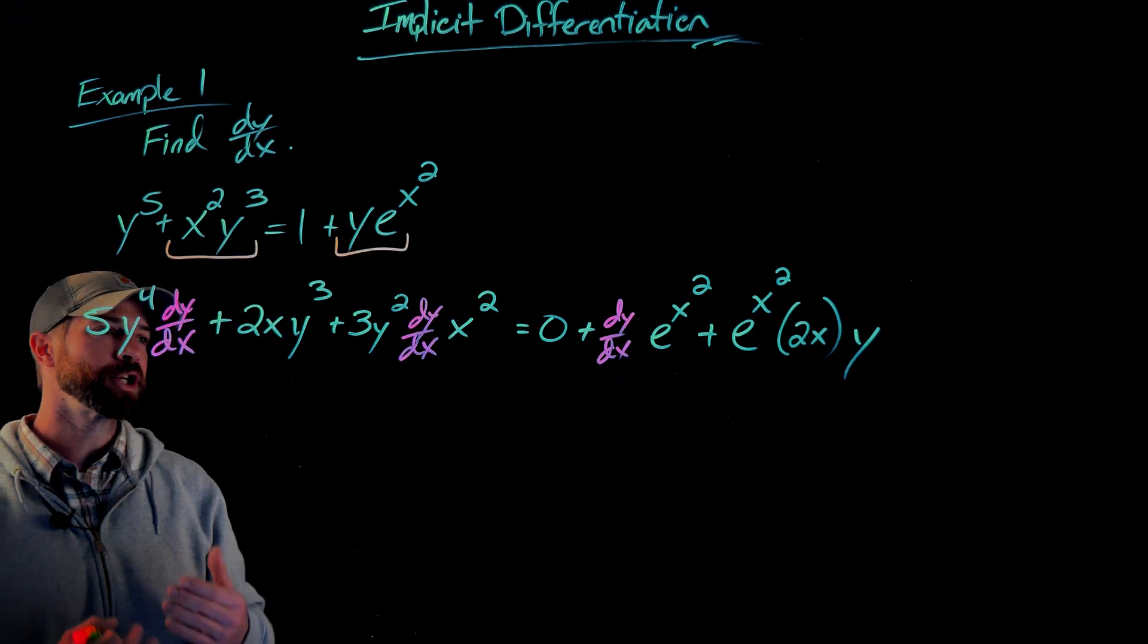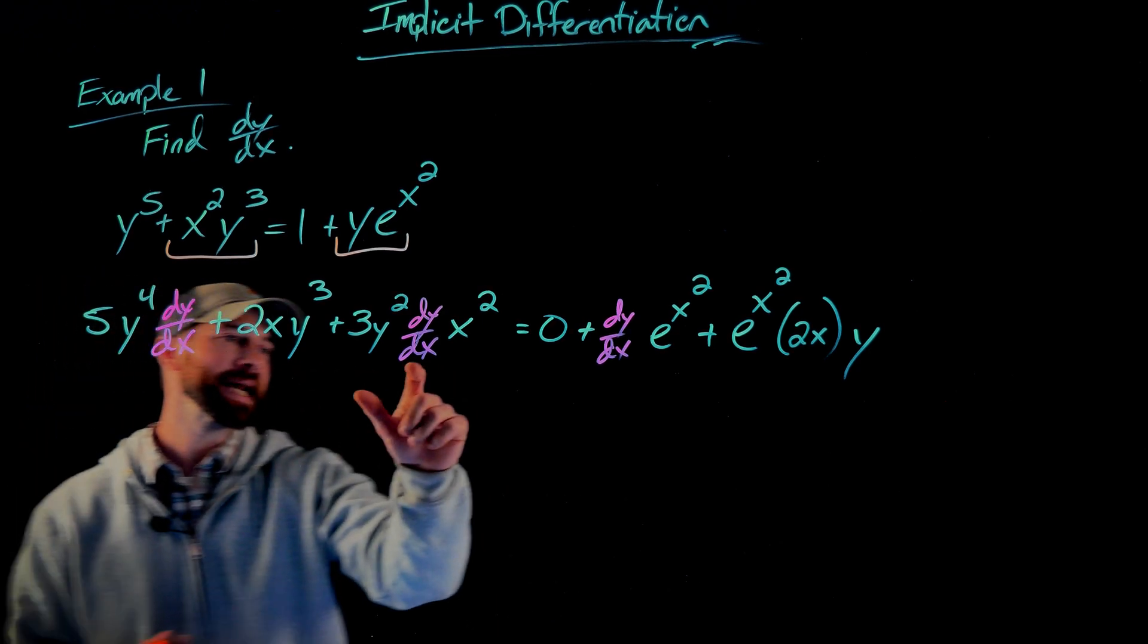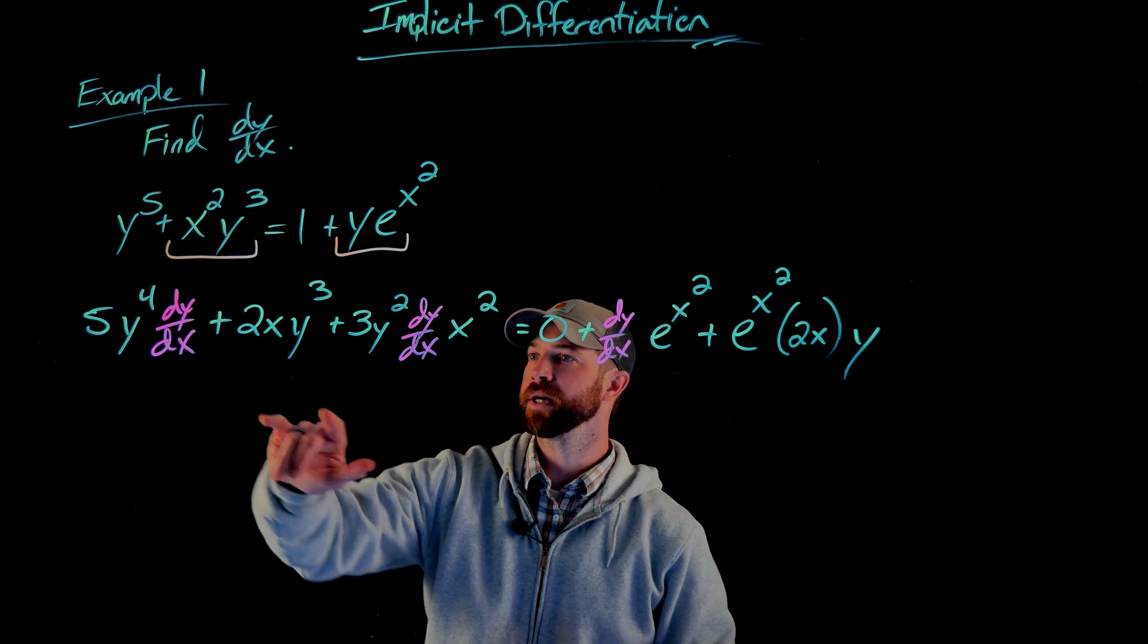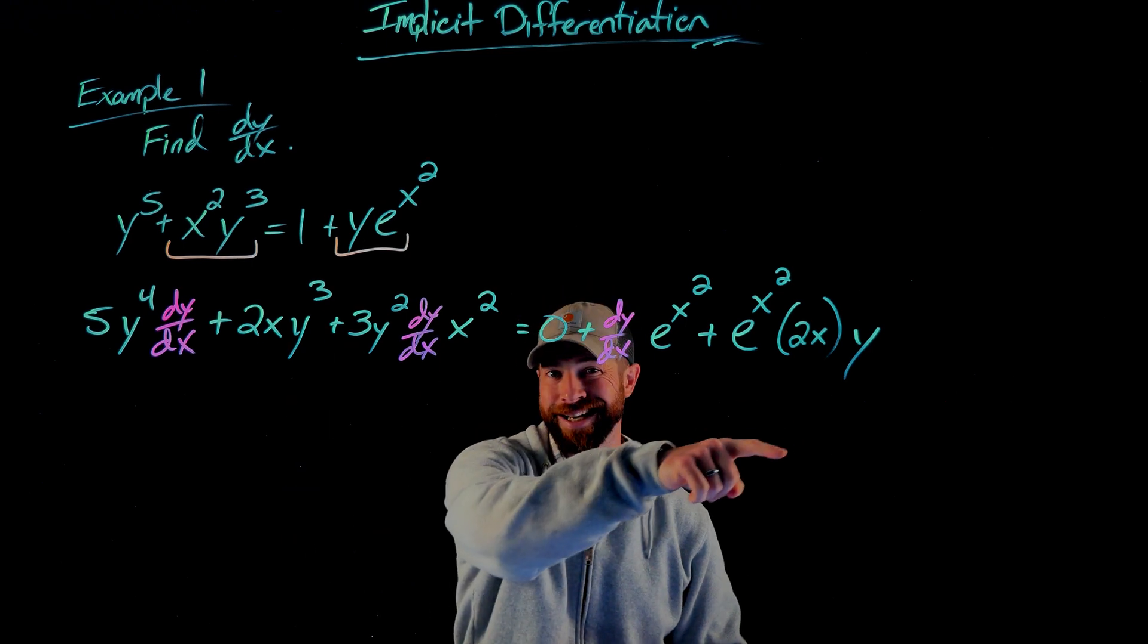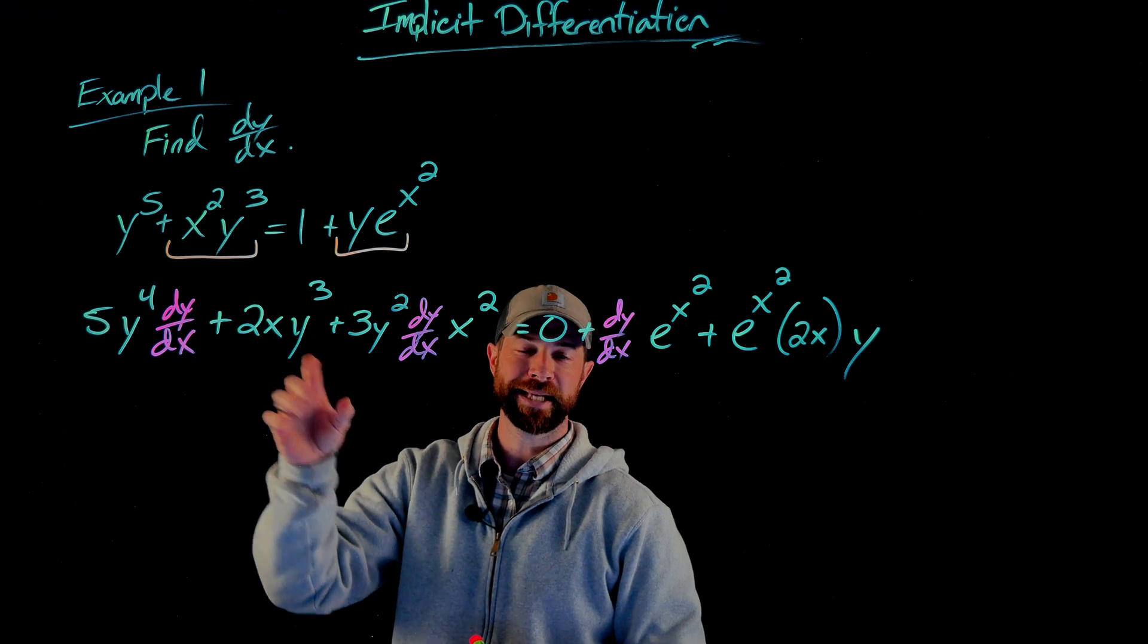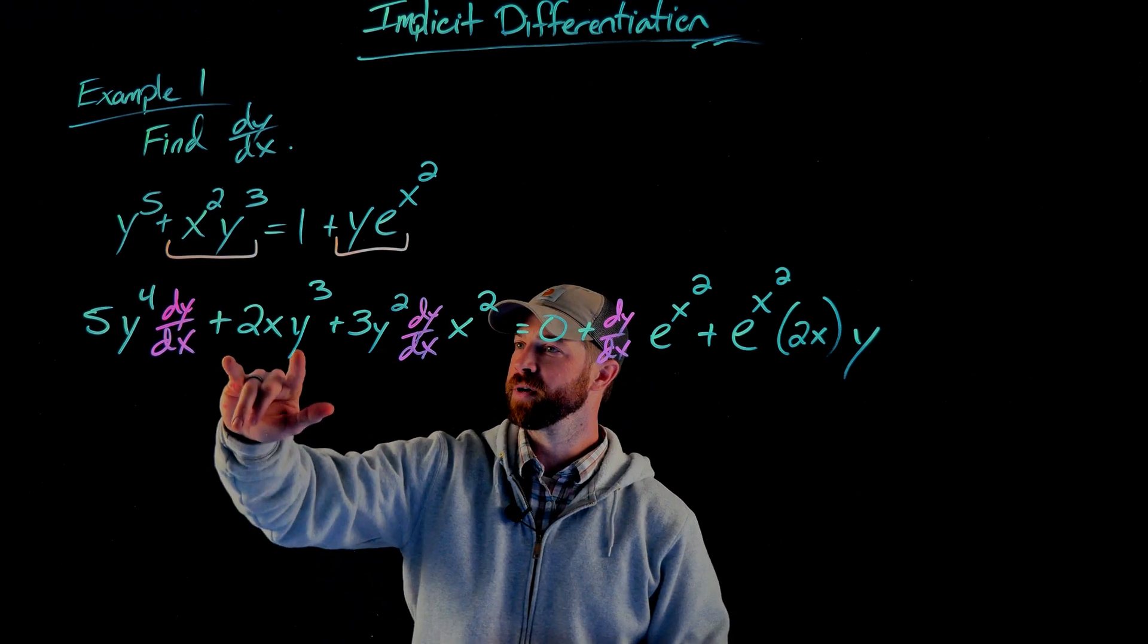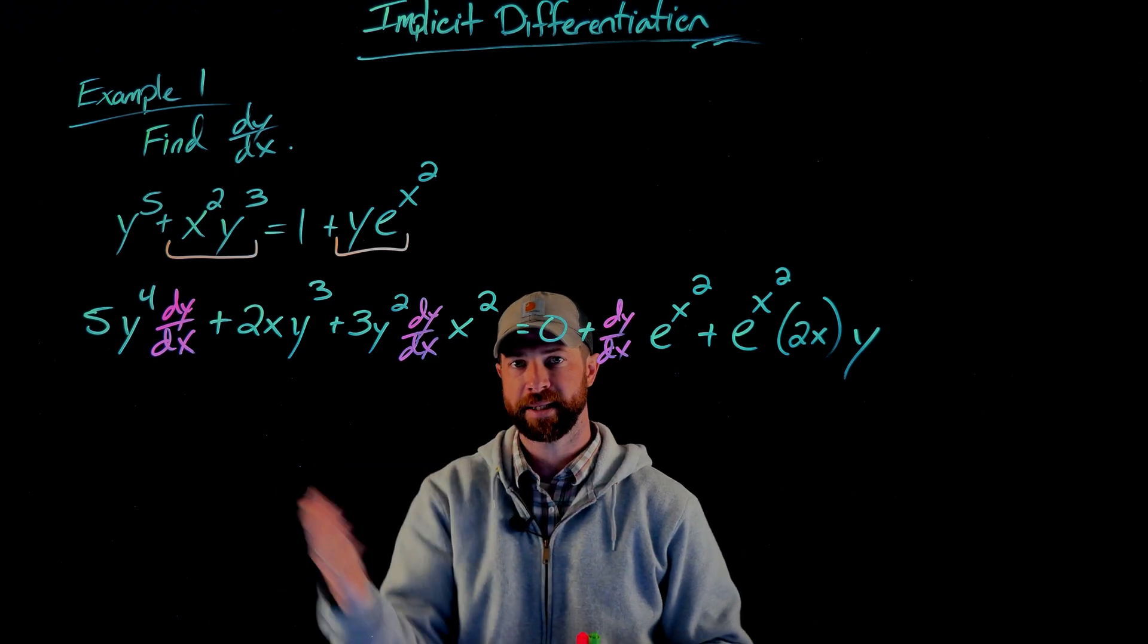So as stated originally, what my job is, is to find out what dy/dx is. The issue is right now is that I have three different terms with dy/dx in it. What I'm going to do is I'm going to move this term over here or subtract both sides by this term, and I'm going to move this term over here. And what that's going to do is put all my terms with a dy/dx on one side, and you should see real quick why I'm doing that.